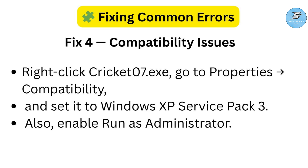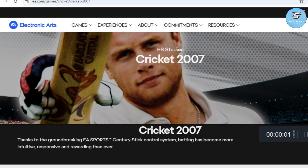This fixes most issues on modern Windows versions. And that's it — EA Cricket 07 is now fully installed and running perfectly on your PC. If this video helped you out, don't forget to like, drop a comment if you run into any issues, and subscribe for more gaming tutorials and fixes. Click on the video on your screen now to watch more tutorial videos. Thanks for watching — see you in the next one.